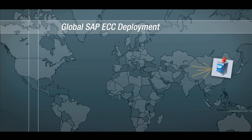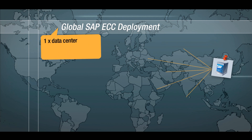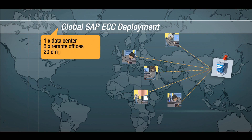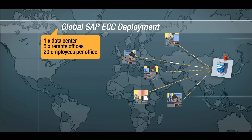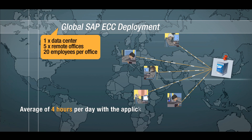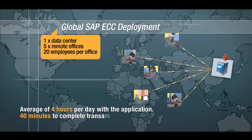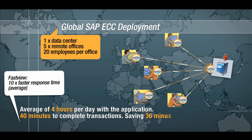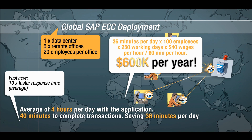Let's take a look at a global SAP deployment with five remote offices with 20 employees per office, deploying SAP ERP central component, ECC. On average, an employee spends four hours per day working with the application, out of which 40 minutes is spent waiting to complete transactions. With FastView, 36 minutes of these waiting minutes per day would be saved, which equals $600,000 on a yearly count.